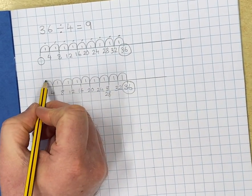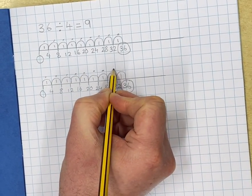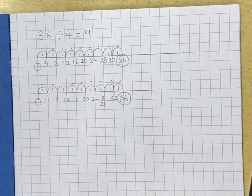Let's count the chunks again, the jumps. 1, 2, 3, 4, 5, 6, 7, 8, 9. So 9 fours fit into 36.